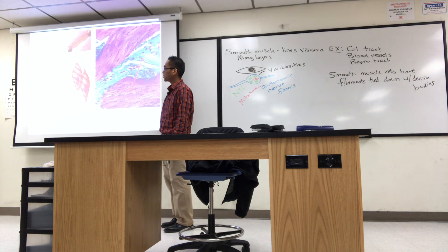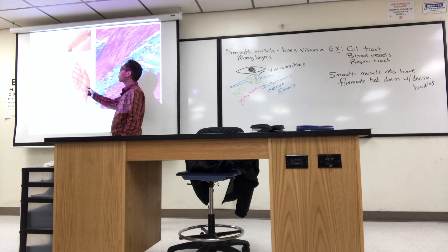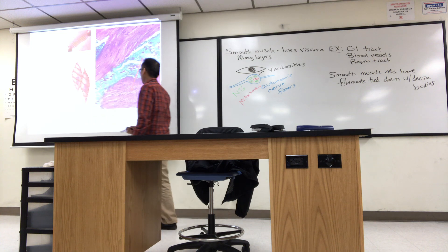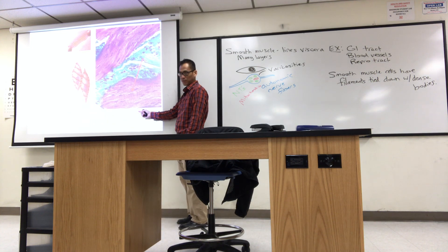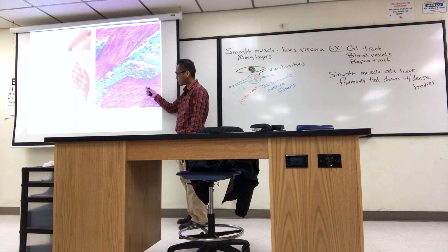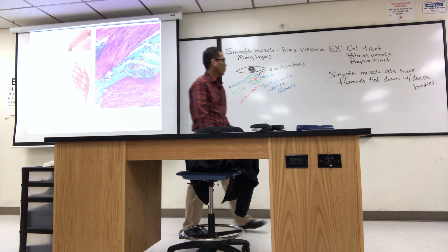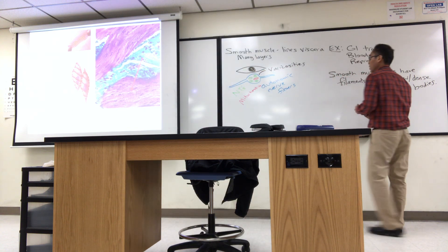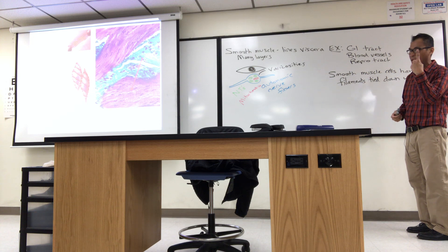When you look at this tissue under the scope, here's the twisted, contracted cell — they show you the thick and thin filaments. This is from the bladder and urinary tract, and it has that squiggly appearance. All the nuclei appear squiggly. So when smooth muscle cells contract, they twist and have a spiral appearance.